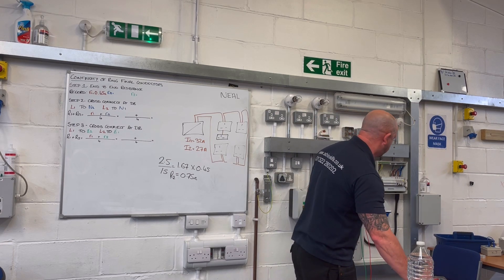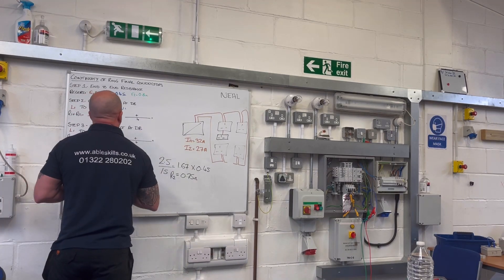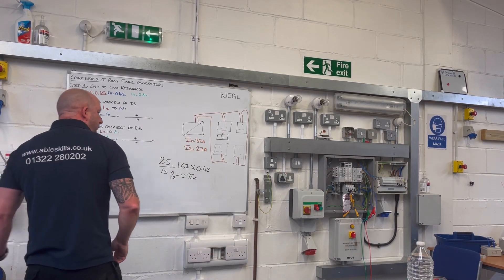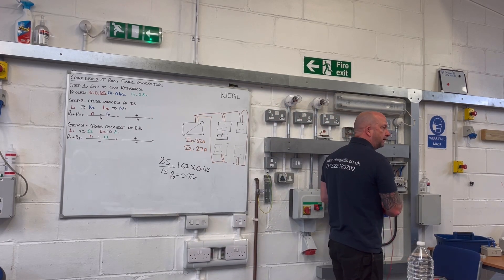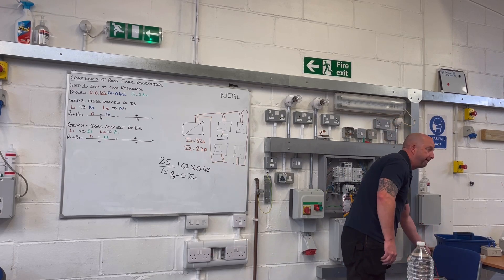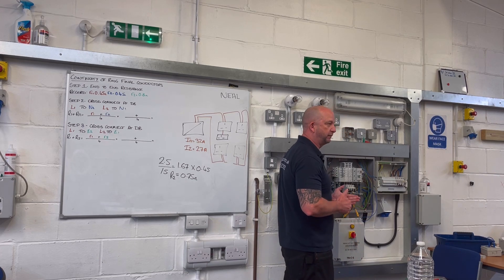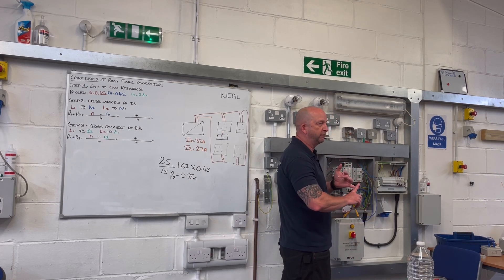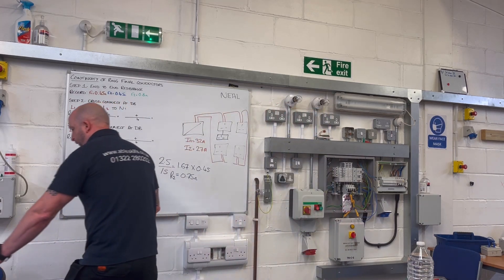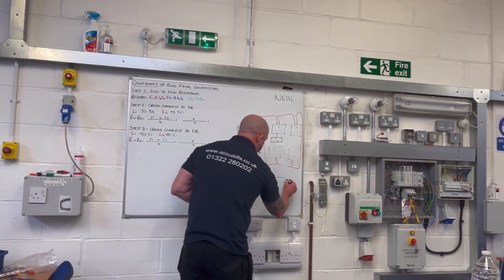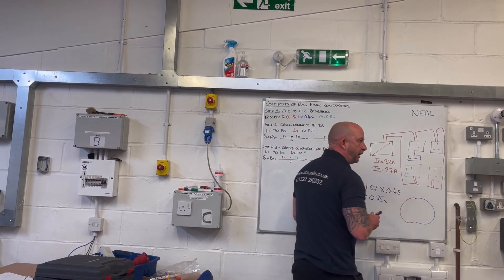So that's step one in the bag, guys. Any questions? Moving on to step two then. What's step two? We need to make a cross connection at the distribution board from one leg of the ring to the other. Effectively, we're turning our cables into one big loop of cable — we're going to connect our neutral to our line. That's what we're going to do.